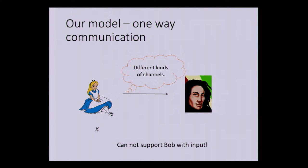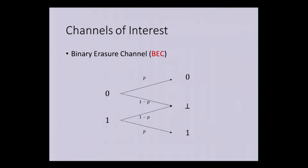There are three main channels we're going to focus on for the talk. The first is the binary erasure channel. In a binary erasure channel, the sender sends a bit — 0 or 1 — and with probability p it's passed as such, and with probability 1 minus p it's erased. So if the sender sends 0, the received bit is 0 with probability p, and erased with probability 1 minus p. This channel already has a security property: the sender does not know whether the receiver received a particular bit, and when the receiver does not receive the bit, it has no idea what the sent bit was.